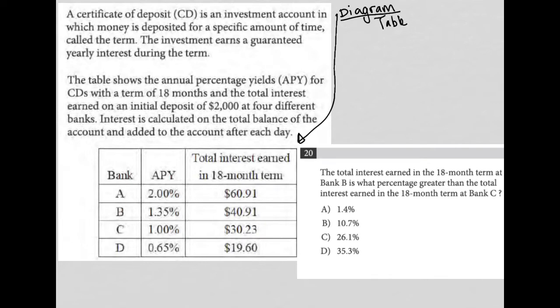The information provided before this table says a certificate of deposit, CD, is an investment account in which money is deposited for a specific amount of time, called the term. The investment earns a guaranteed yearly interest during the term — so every year you get something guaranteed in terms of interest. The table shows the annual percentage yields, APY, for CDs with a term of 18 months.